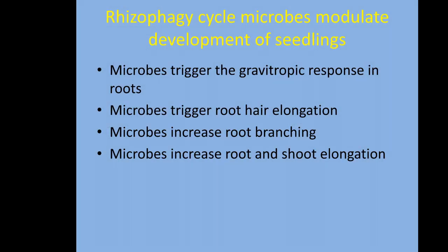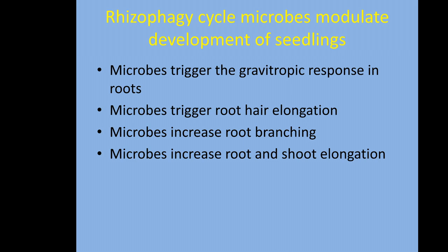The cycle of microbes going inside is very important because they trigger plant development. Without these microbes, plants don't develop properly. For example, if we remove all microbes from plant seedlings, the roots will not grow downward — they won't show the proper gravitropic response; instead they may grow into the air or stay on the surface, which is not normal. Also, microbes trigger root hair elongation — if we remove all microbes, root hairs don't form properly.